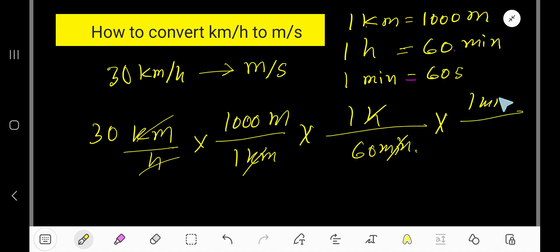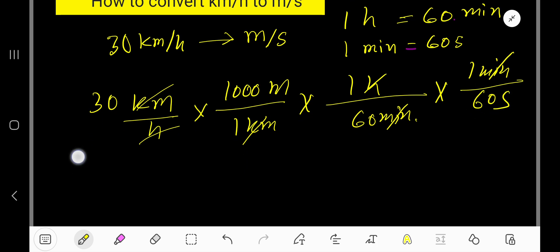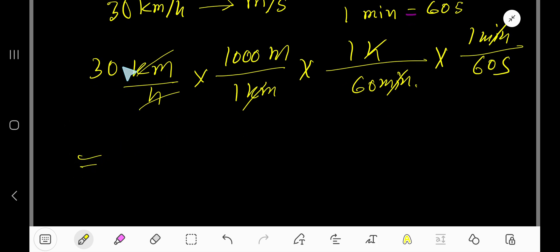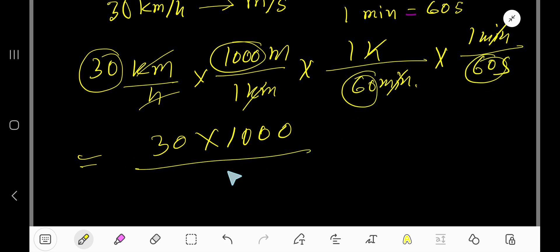So multiply the top numbers: 30 times 1000 divided by 60 times 60. We have meters at the top and seconds at the bottom.